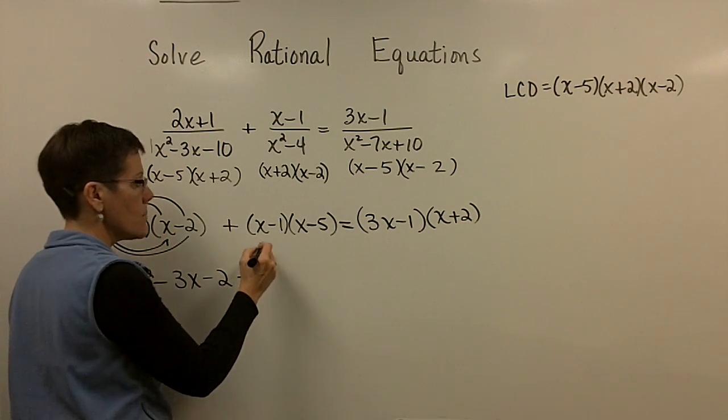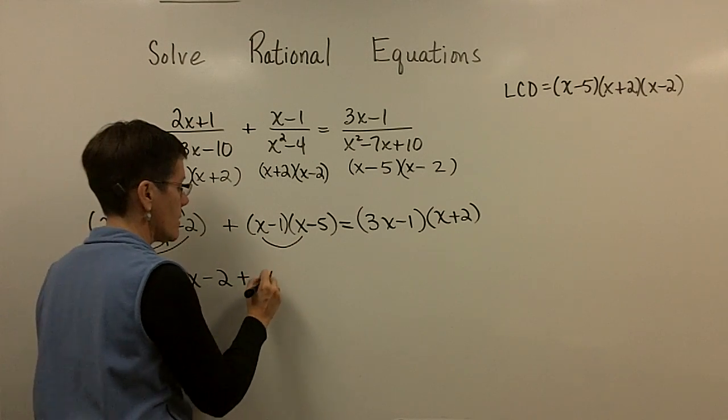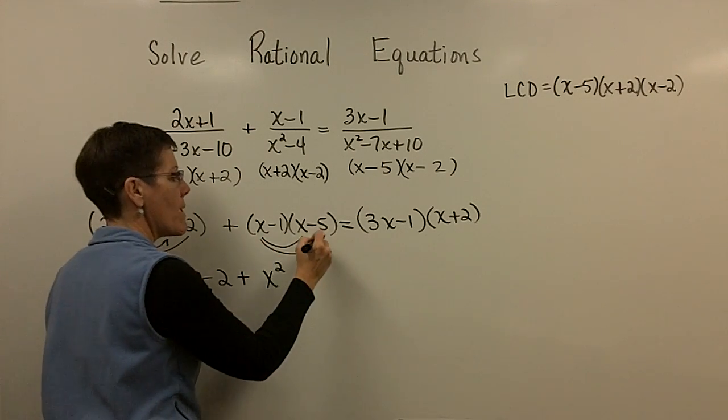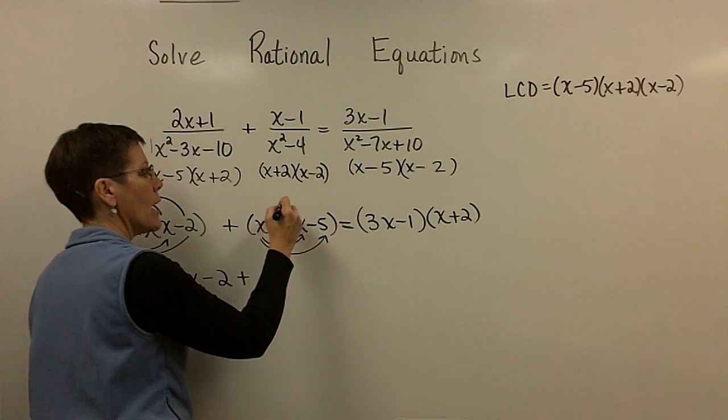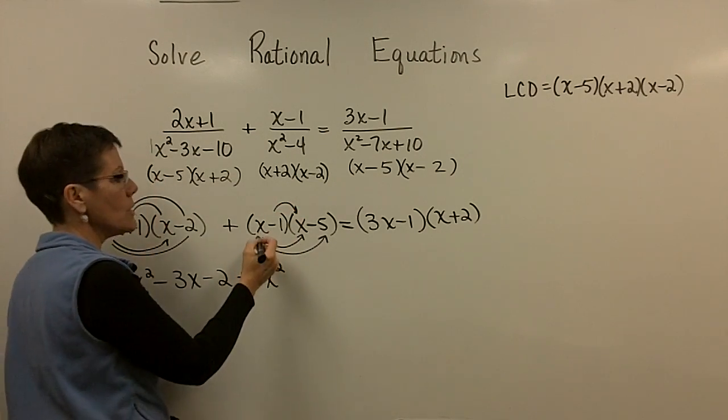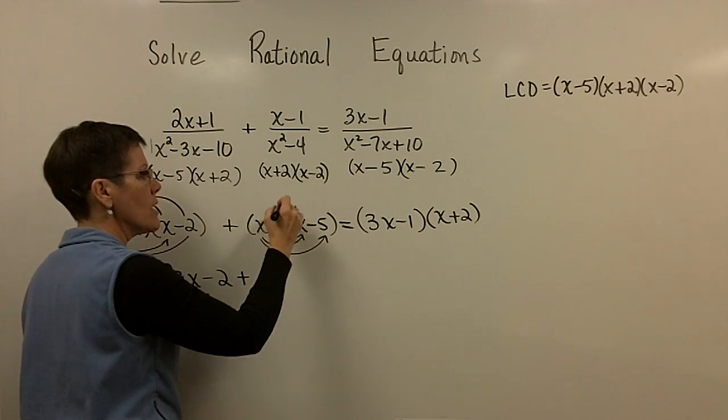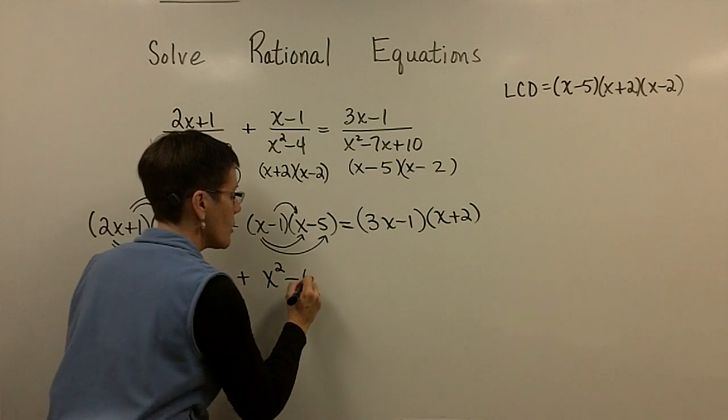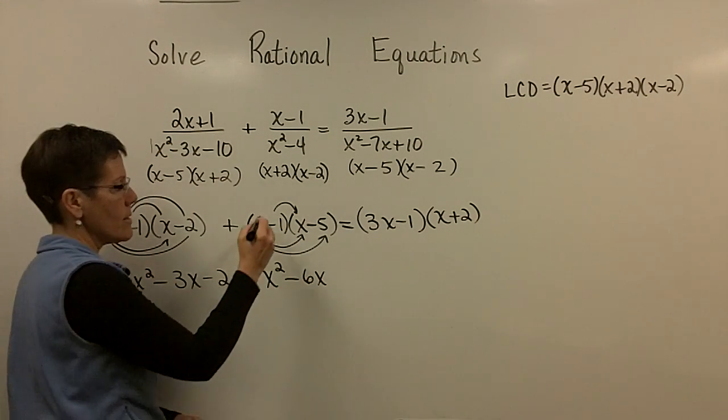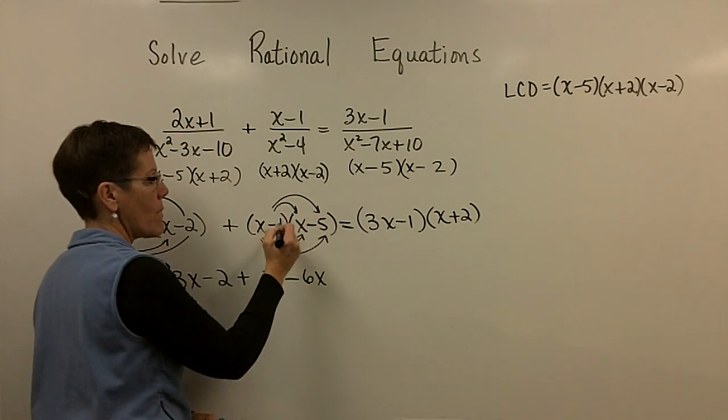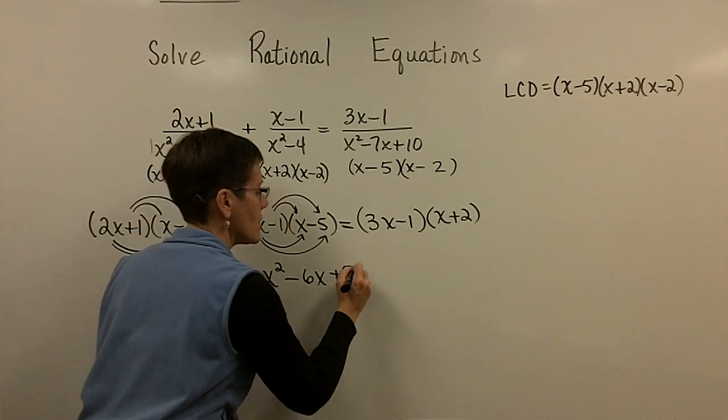So that is the trinomial that results when you FOIL that. I've got a plus sign here, thank goodness. x times x is x squared. Here I've got minus 5x and minus 1x. A minus 5x and minus 1x for a total of minus 6x. And minus 1 times minus 5 is positive 5.